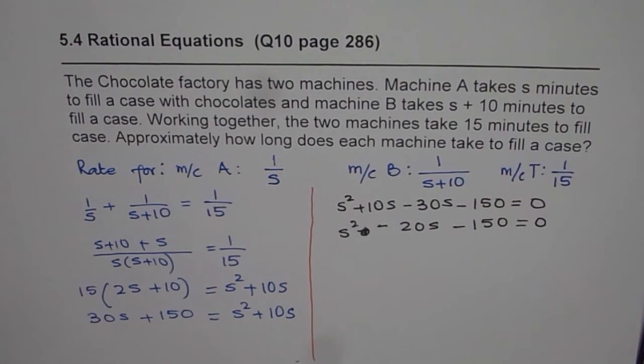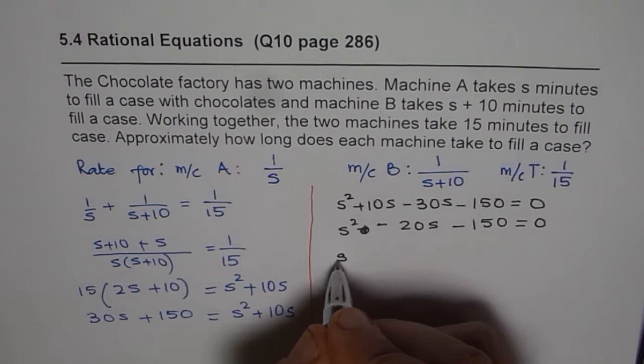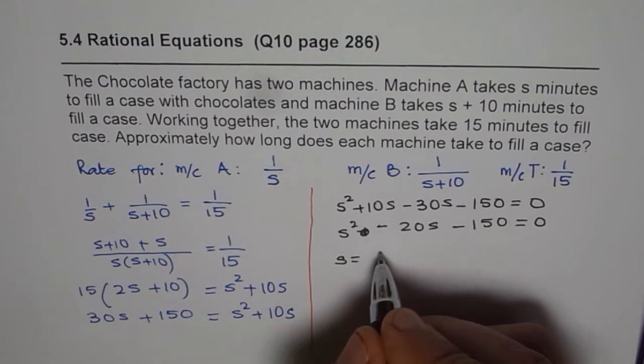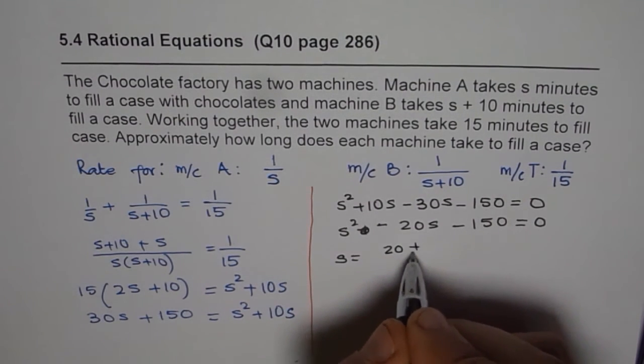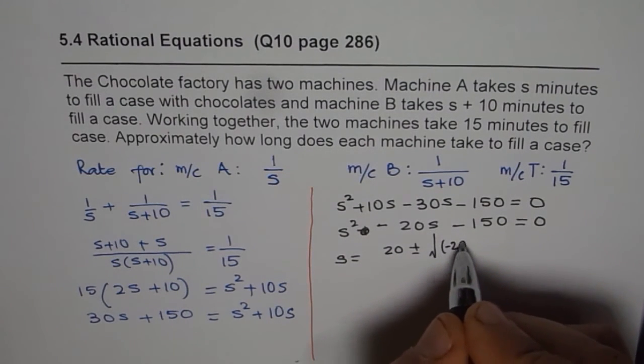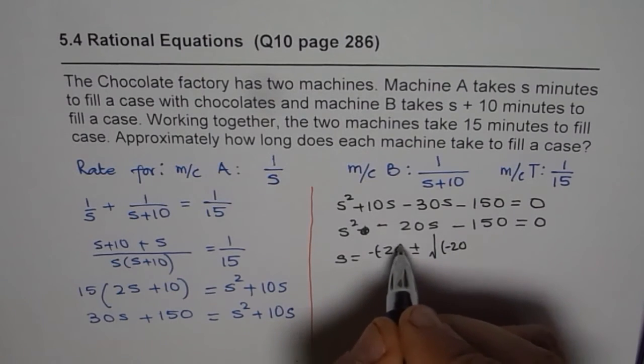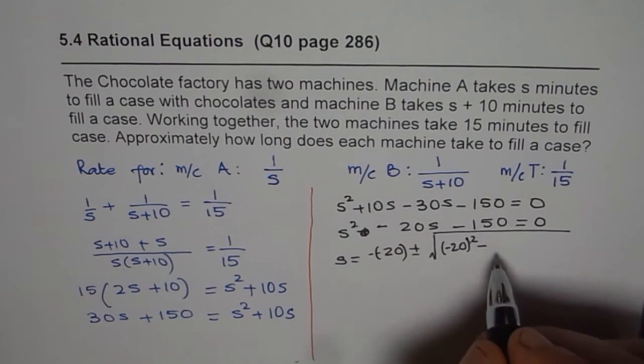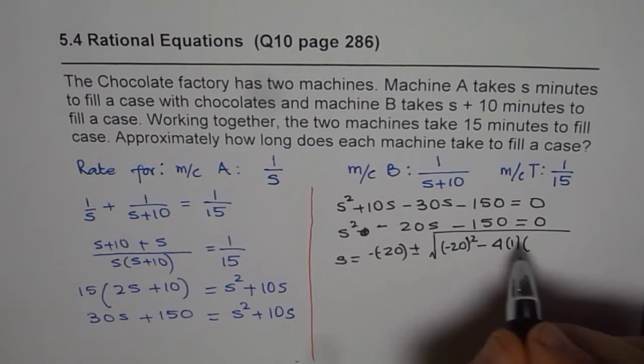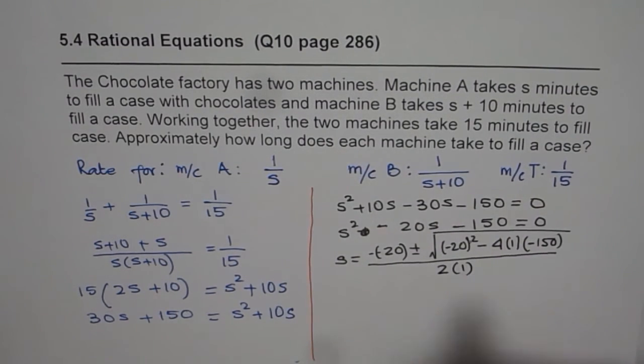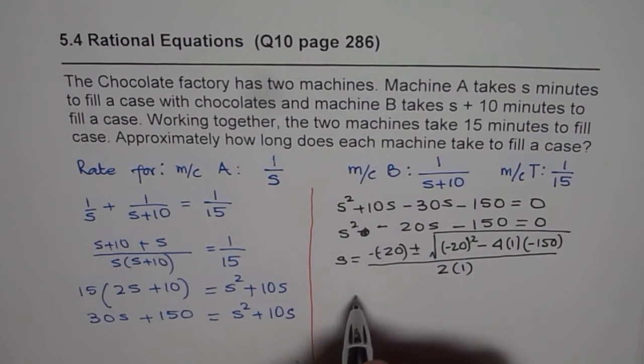So at this stage what you can do is you can apply the quadratic formula and find the answer. So s will be equals to minus of B which is plus 20, plus minus square root of minus 20 squared minus 4 times A times C. So 4 times A is 1 and C is minus 150 divided by 2 times A which is 1. That is direct application of the formula.